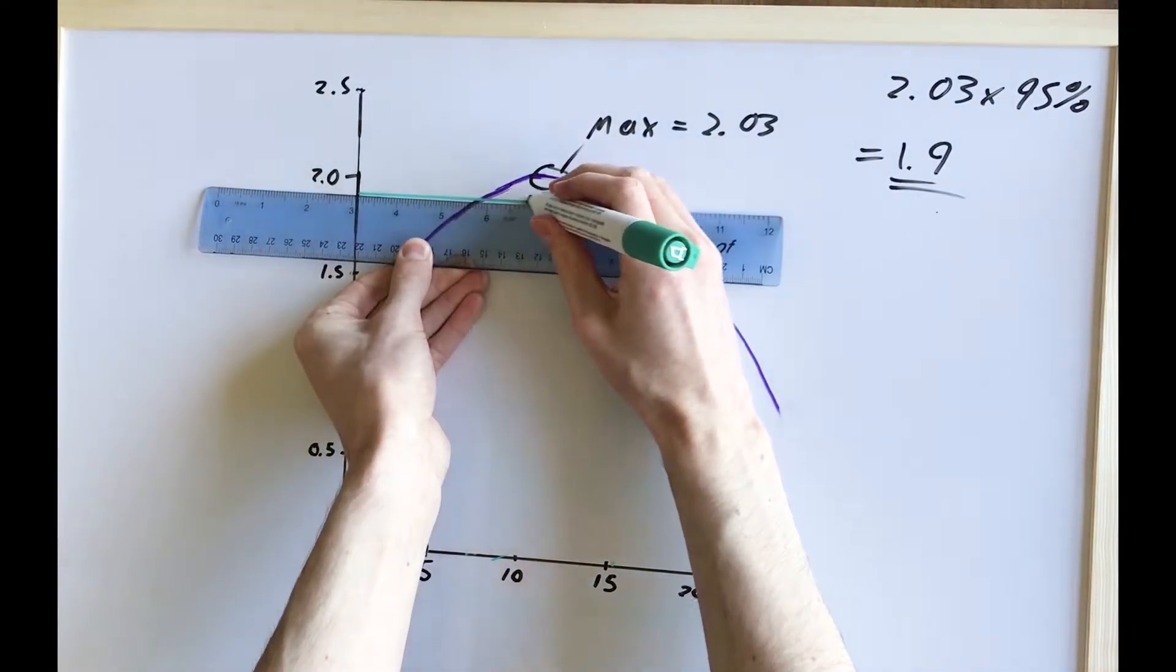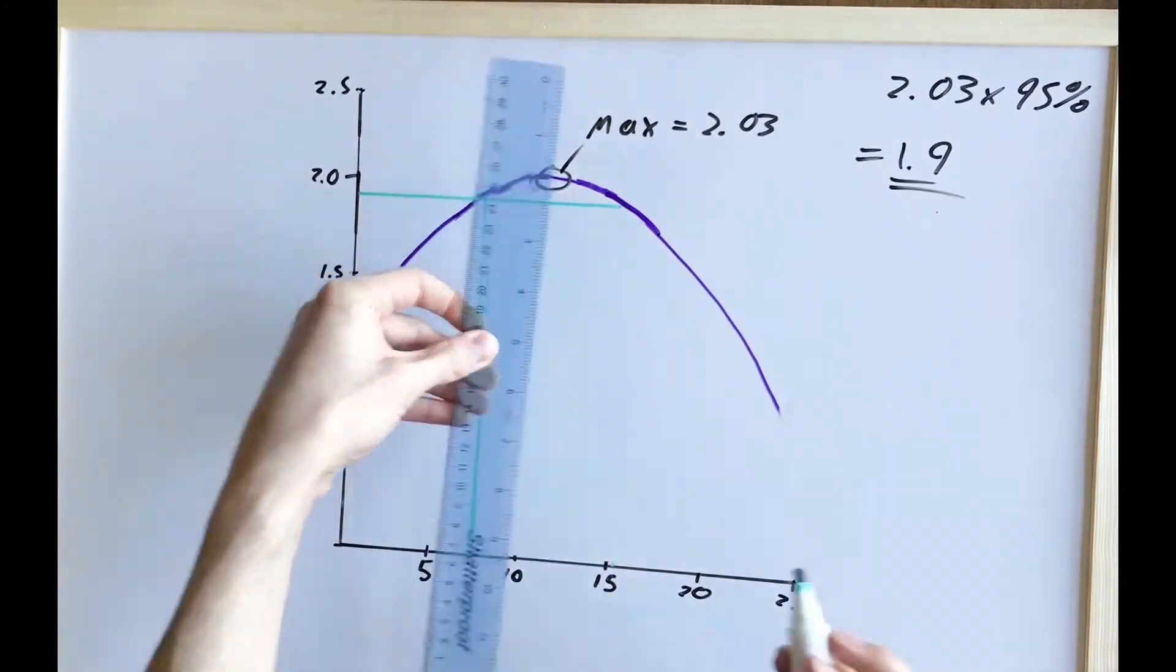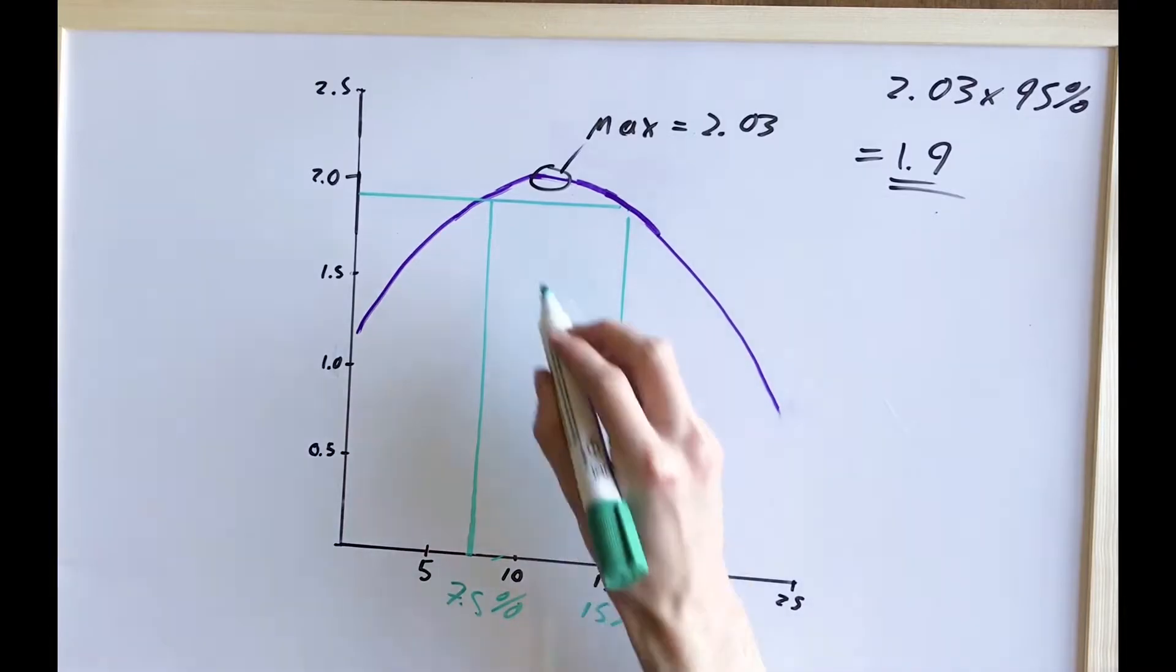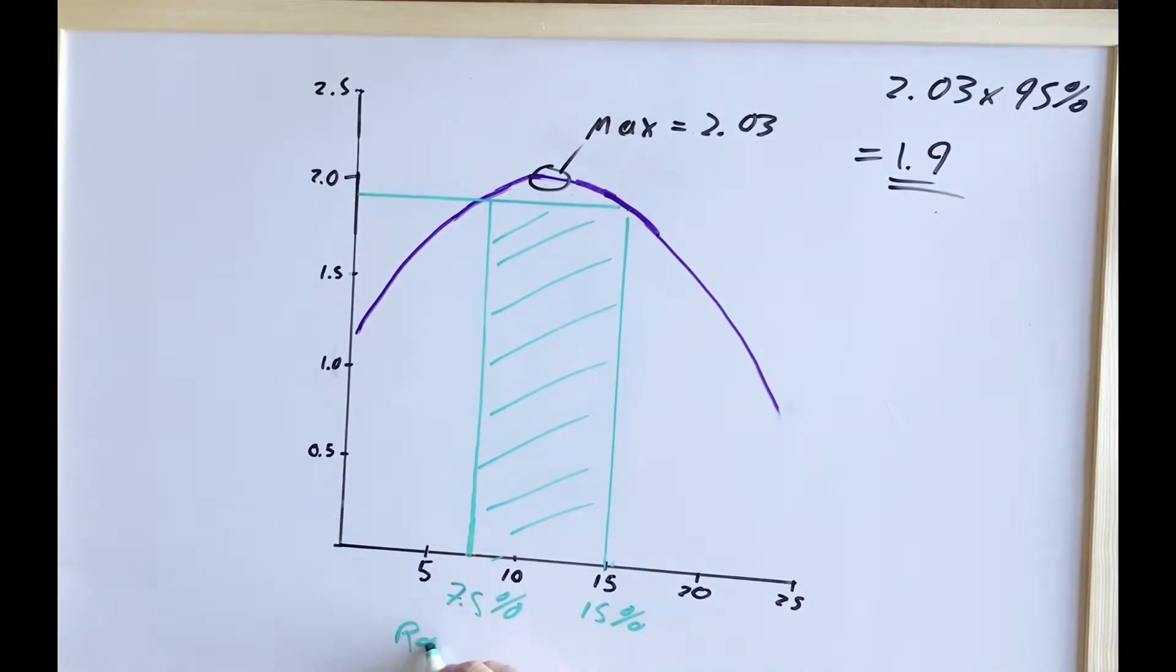From our graph, we can create a suitability range by getting 95% of the max dry density. This gives the contractor leeway when compacting, staying within the upper and lower bound moisture content limits.